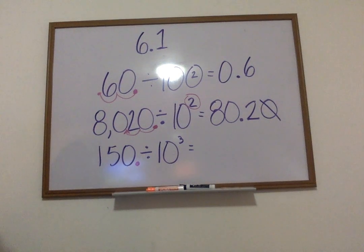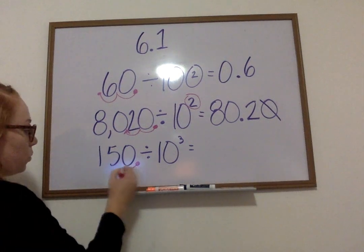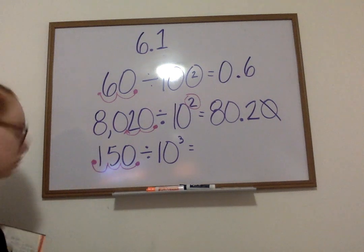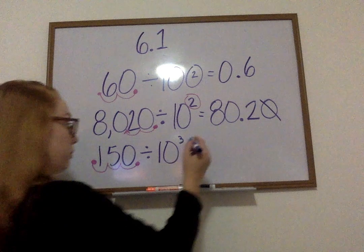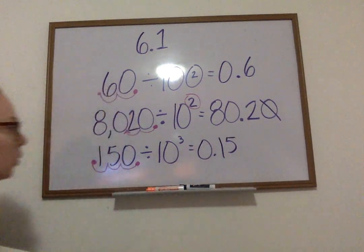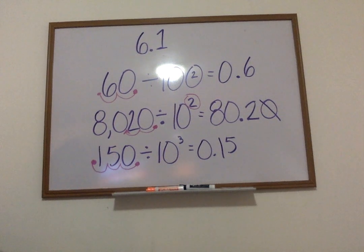So, this one is going to go 3 hops left. 1, 2, 3. This is where it should be at now. My new answer is 0.15 or 15 hundredths is how you could also say it. Let's try a few more.